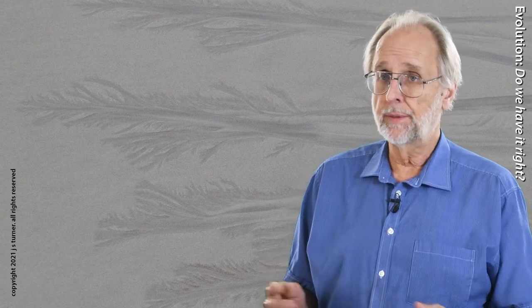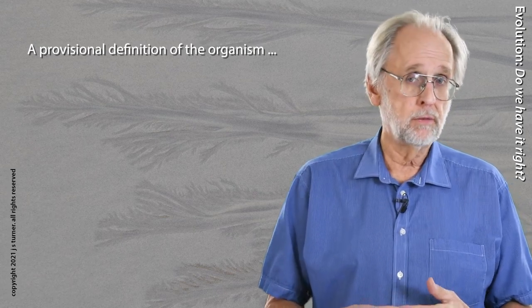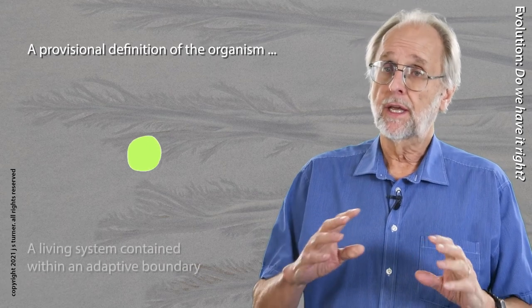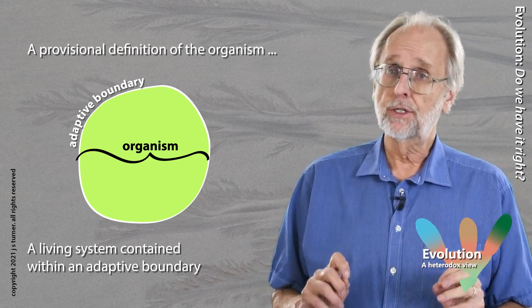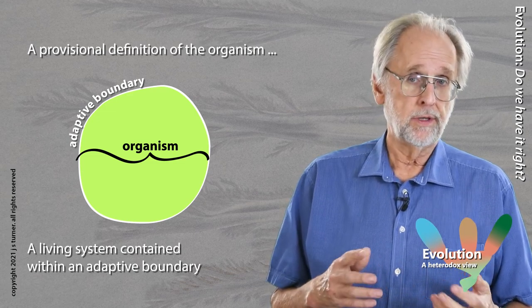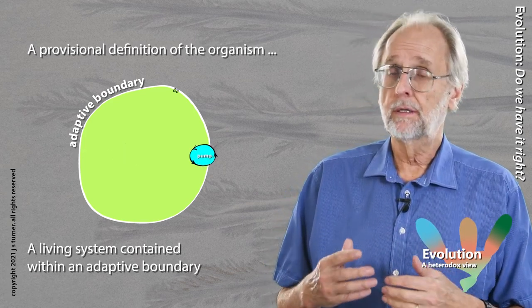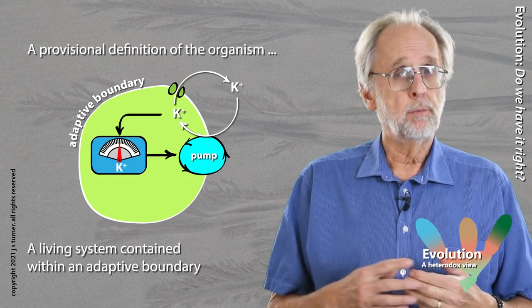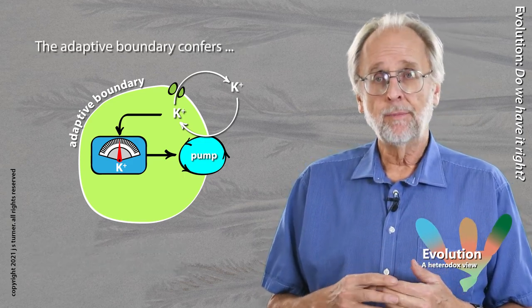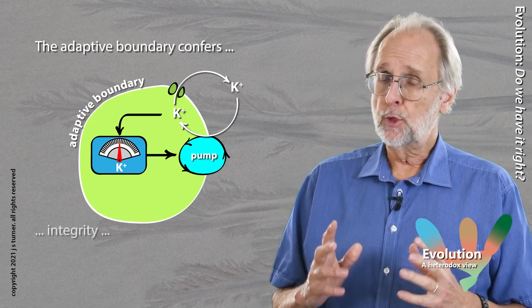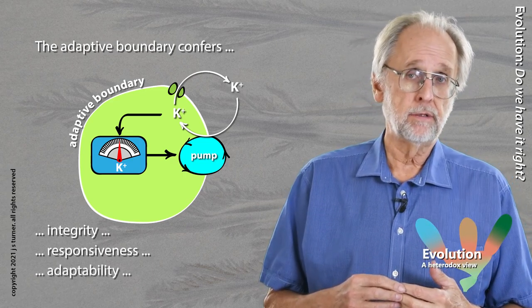Phew, that seemed to be a complicated diversion. But it's led us to a provisional definition of the organism, the question we started with, remember? To wit, an organism is a living system that is contained within an adaptive boundary. This definition of the organism is physiological in nature. It's not concerned with objects like bill size, but with processes, the flows of matter across the boundary moved by pumps embedded in the cell membrane, the channels. There's a lot more to this, of course, but that's really the essence. Together, the processes mediated by the adaptive boundary confer upon the cell its integrity, its responsiveness, and its adaptability. By this definition, the cell clearly qualifies as an organism, which seems sensible.